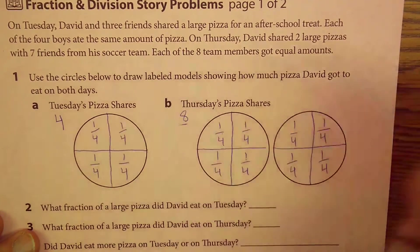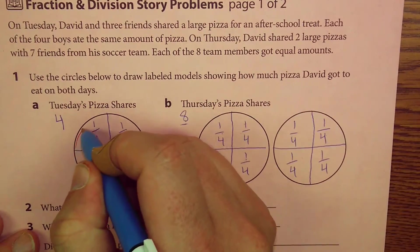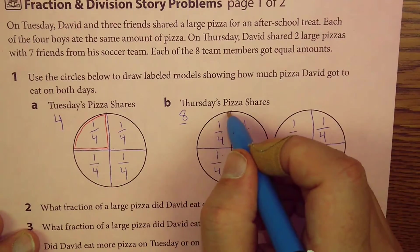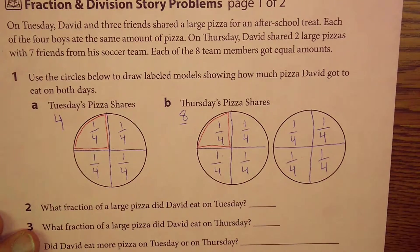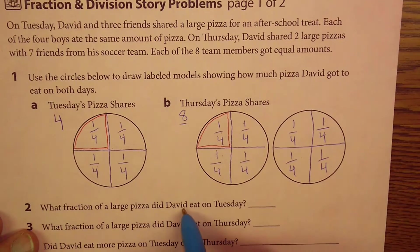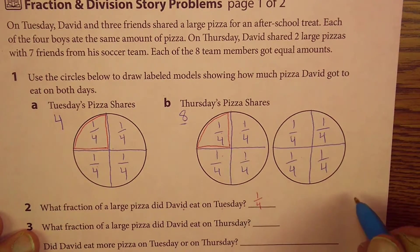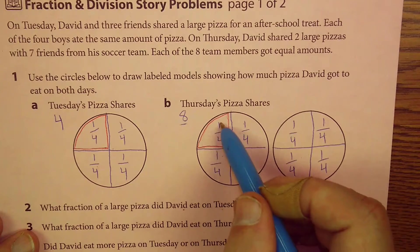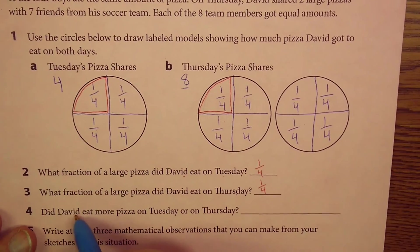So, in this, I'm going to use maybe a different color here. David's one of the people, right? So, we'll say David got this slice. And on Thursday, David, once again, is one of the people. He had seven friends, so his other friends got to eat the rest of the pizza. So, what fraction of a large pizza did David eat on Tuesday? Here's Tuesday. He ate, well, it says right there, one-fourth. What fraction of a large pizza did David eat on Thursday? Well, if this is David's slice, once again, he ate one-fourth.